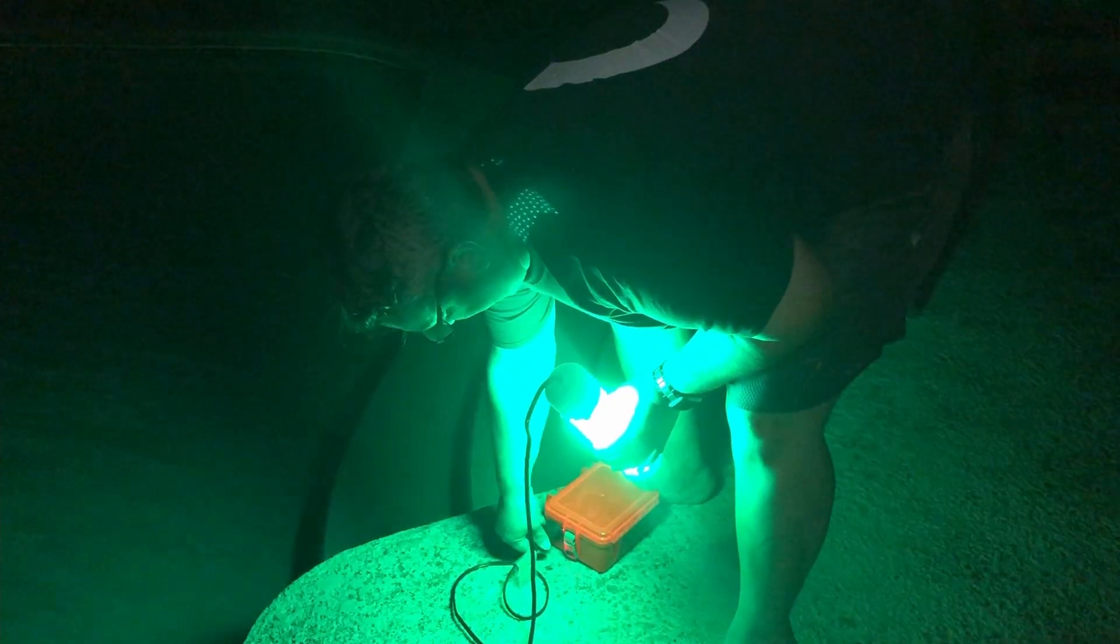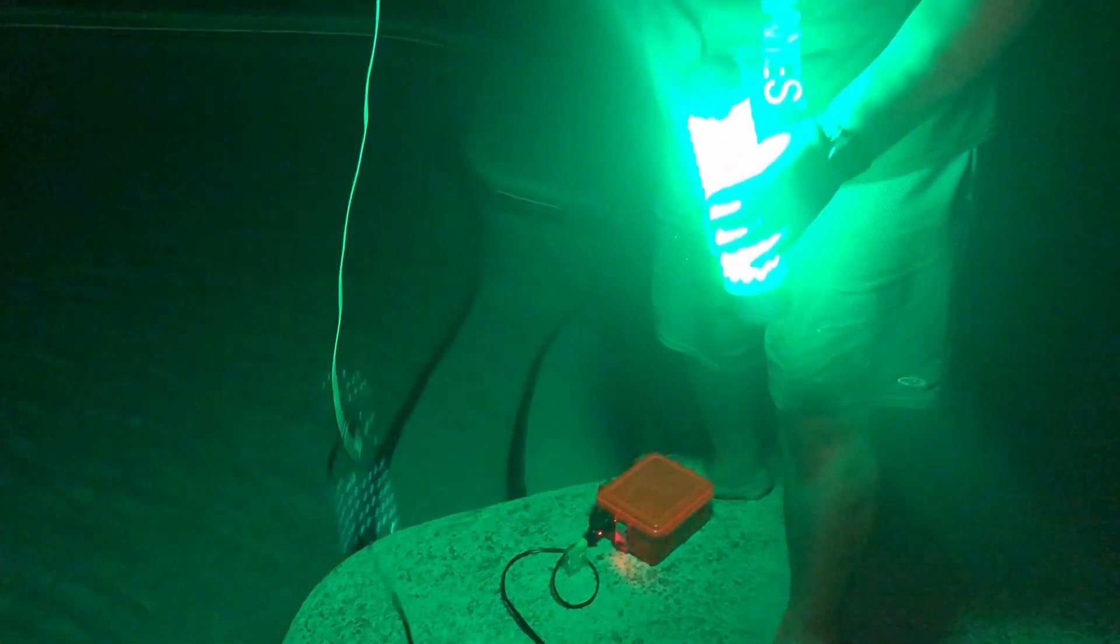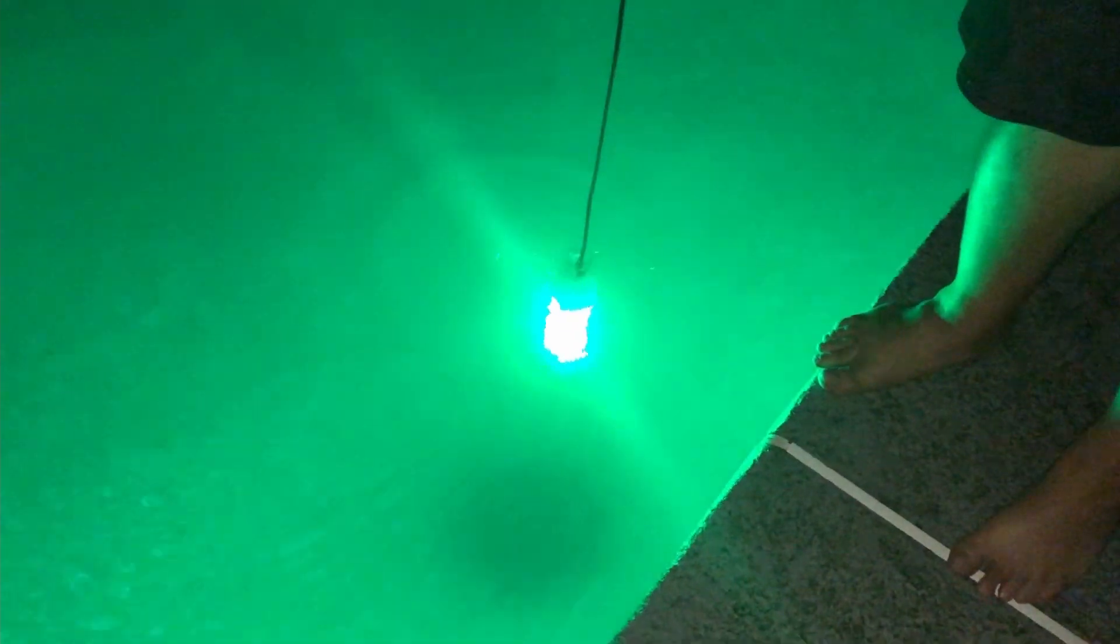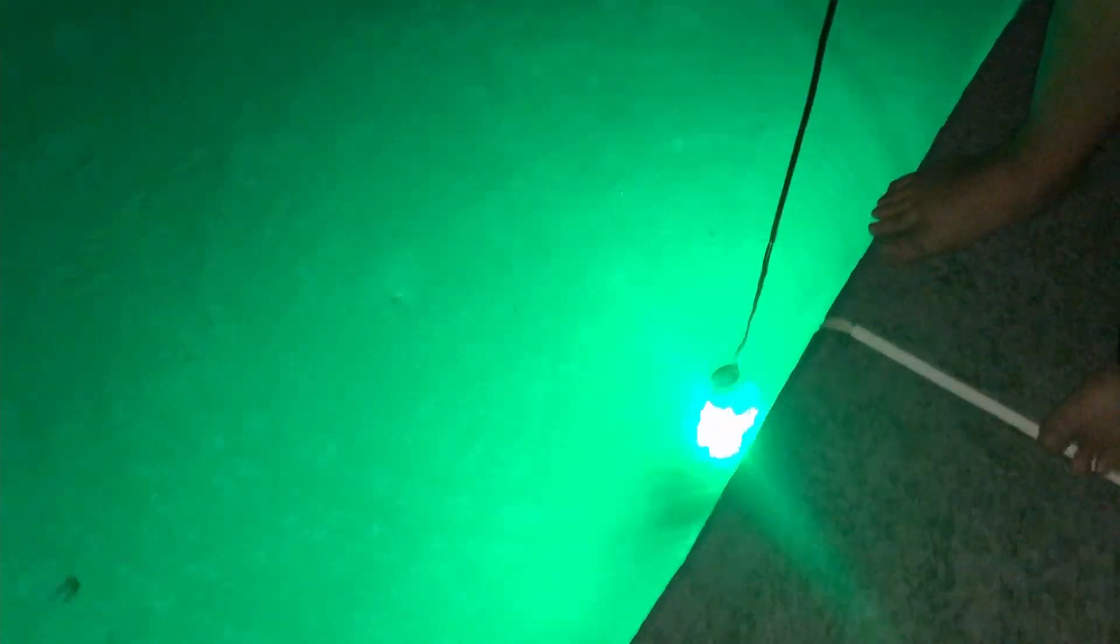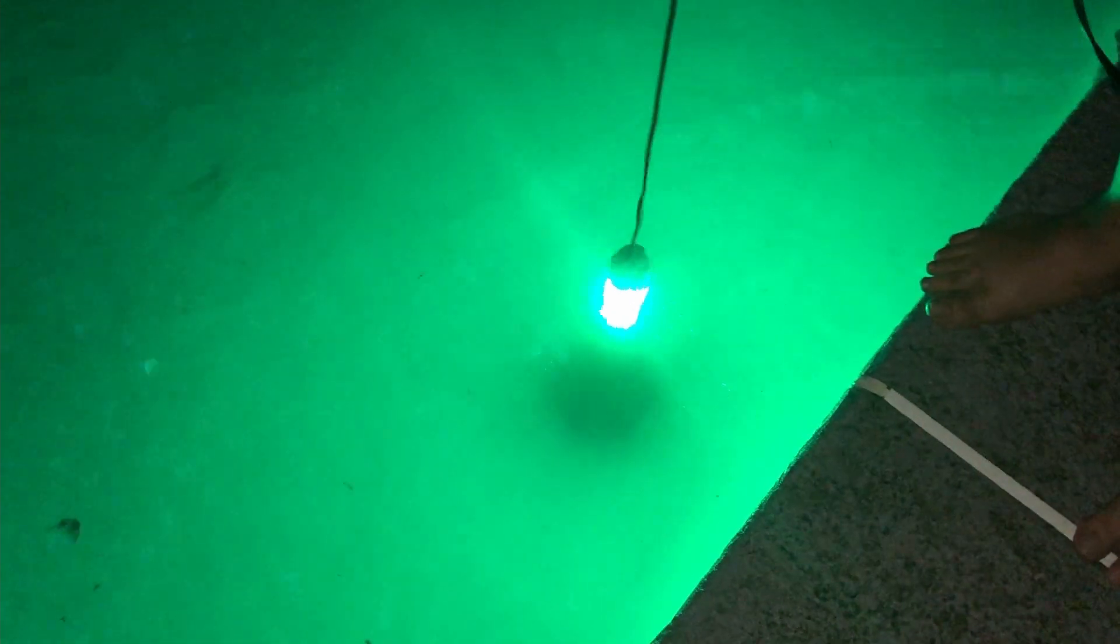And here we are. So I'm going to plug the cigarette lighter plug into the battery box that I made. If you have not already, you can check out the video linked right here so that you can see how I made that battery box. Now we're going to lower the light down into the water and see that it is still working and illuminating the pool.